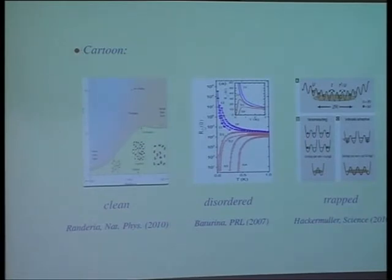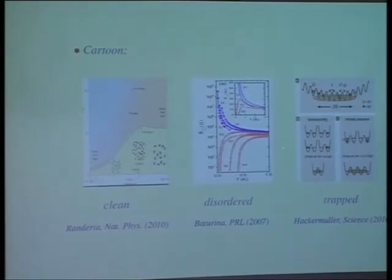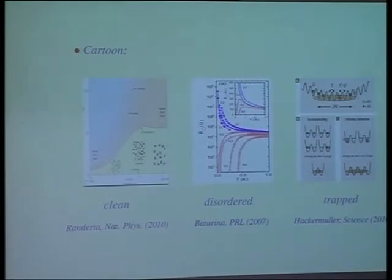This is what happens to the attractive fermion system in the presence of increasing disorder. These are experiments on tin nitride, done by Baturina and co-workers, which shows that with progressively increasing disorder, you go from a superfluid state — a metal becoming a superfluid — to ultimately an insulator beyond a critical resistivity as the disorder is increased. So this is the SI transition with increasing disorder in this attractive system. And Professor Finkelstein will talk about some aspects of this tomorrow.